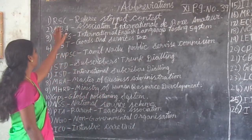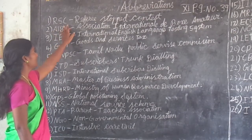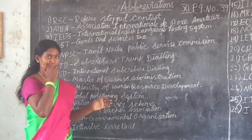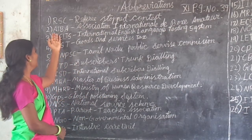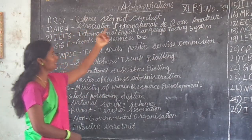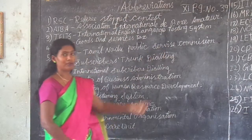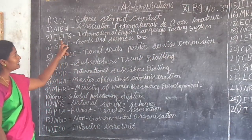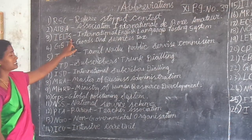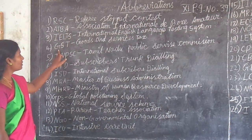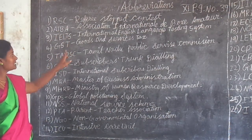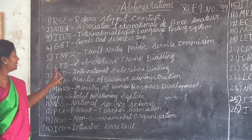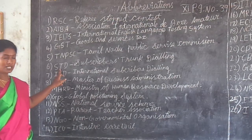RSC - Referee Stopped Contest. The abbreviations are one mark each. AIBA - Association International De Boxe Amateur. IELTS - International English Language Testing System. GST - Goods and Service Tax. TNPSC - Tamil Nadu Public Service Commission. STD - Subscriber Trunk Dialing.